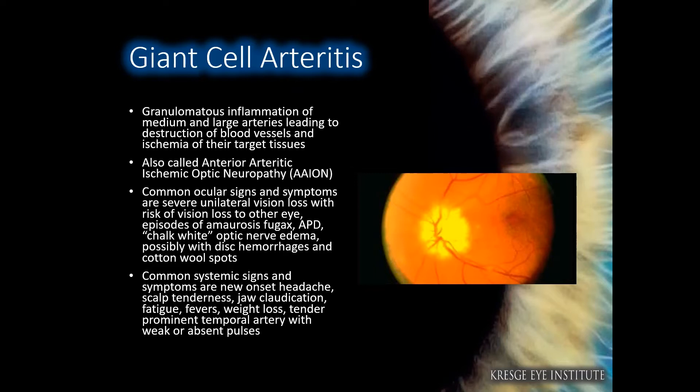Common ocular signs and symptoms include unilateral vision loss, episodes of amaurosis fugax, an APD, a chalk white appearance of the optic nerve with edema, and possible disc hemorrhages and cotton wool spots. Common systemic signs include new onset headache, scalp tenderness, jaw claudication, weight loss, fevers, fatigue, chills, and tender prominent temporal arteries with weak or absent pulses.